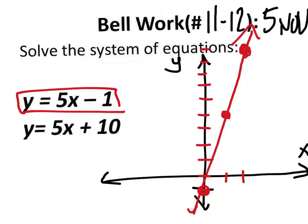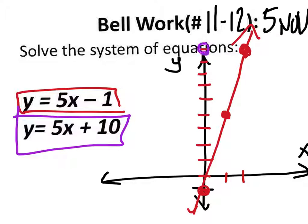Let's grab the next one: y equals 5x plus 10. 10 is up here, so this is our y-intercept. I'm going to make my slope 5 over 1. I need these both to be negative, because if I go up any further it's going to mess with the bell work. So I'm going to go down 5 — 1, 2, 3, 4, 5 — and to the right 1, putting me right here. Down 5 and to the right 1 is right here.